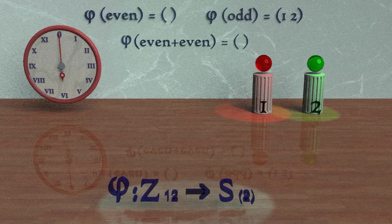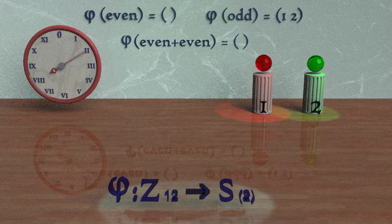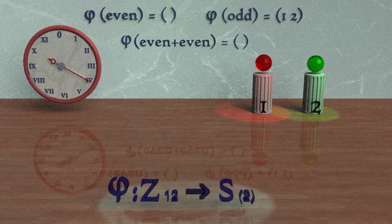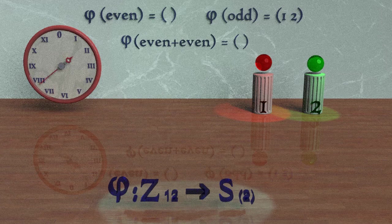Now remember, an even integer plus an even integer is still an even integer. If we were to perform phi on the answer, say 4 plus 4, which is 8, we would still get the identity element.